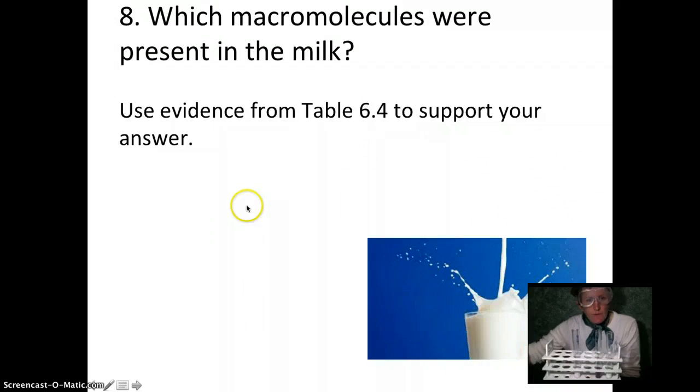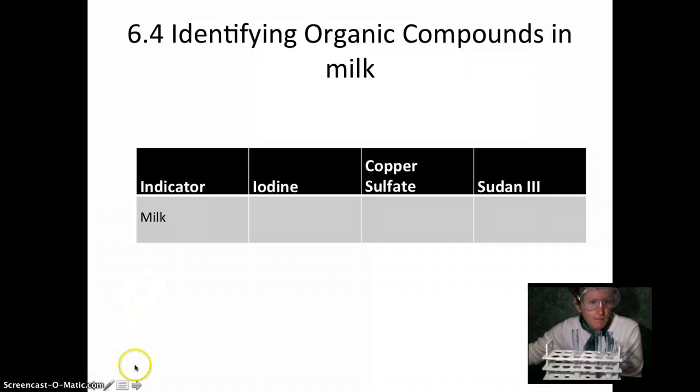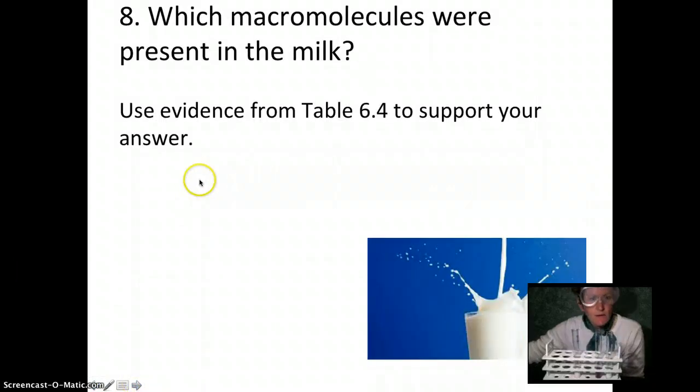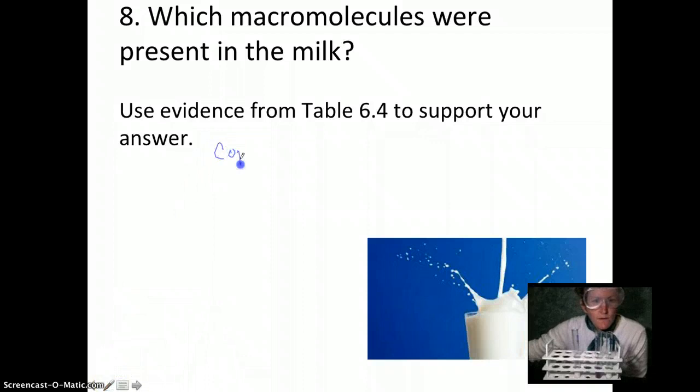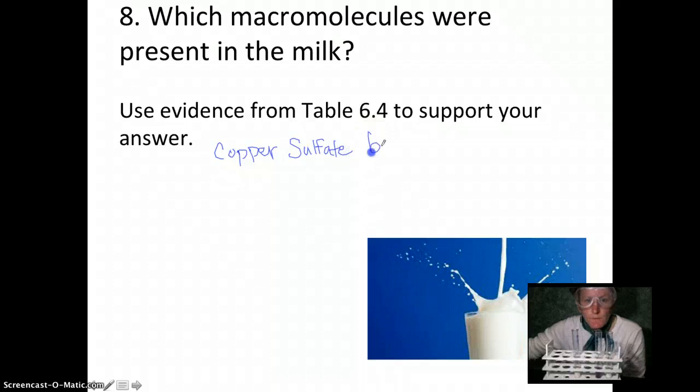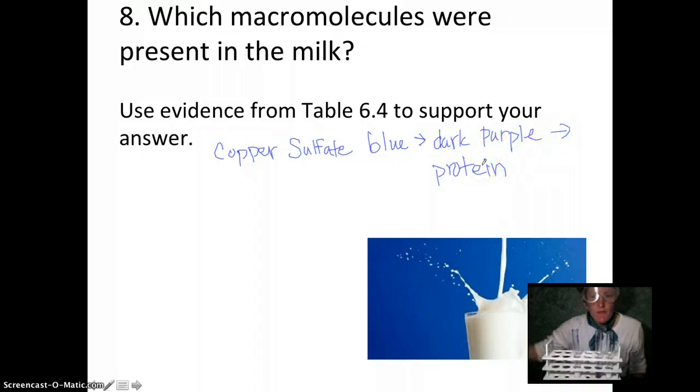Which macromolecules were in the milk? Well, let's use evidence from our table. The evidence is we saw that the copper sulfate changed color, so copper sulfate went from blue to dark purple. And the other two indicators did not change. There was no change in the other two indicators.